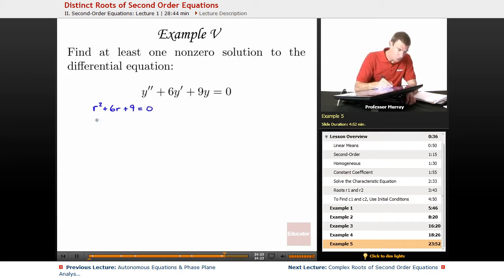And that actually factors as a perfect square. That's r plus 3 squared is equal to zero. So our roots here, we get a double root, r is equal to negative 3, and then our other root is also negative 3, so we really only get one root from that.